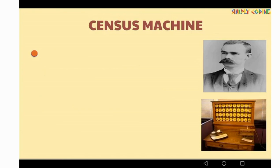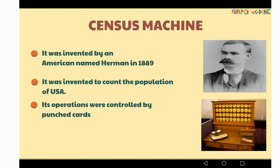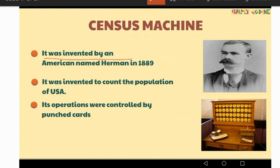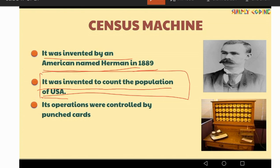Next is the Census Machine. It was invented by an American named Herman Hollerith in 1889. It was invented to count the population of the USA. Its operations were controlled by punch cards, so this device is also based on punch card technology.